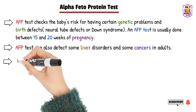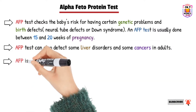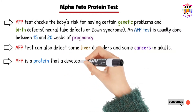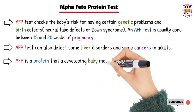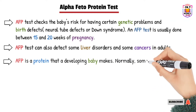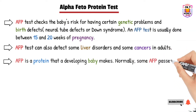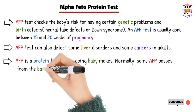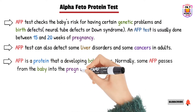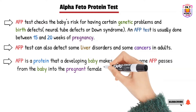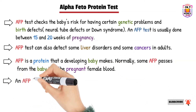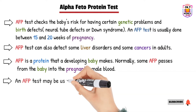In pregnant ladies, AFP is made in the fetus inside the womb or inside the placenta. Some of the AFP then passes into the blood of the pregnant female, and we collect a sample from the pregnant lady to check whether there is any genetic disorder or not.